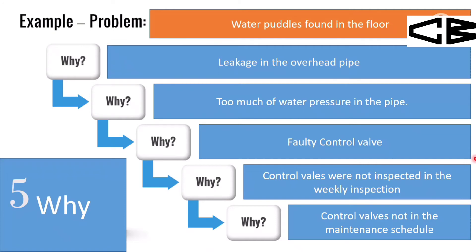Here is an example. The problem: water puddles found on the floor. Why? There was a leakage in the overhead pipe. Why was there a leakage? Too much water pressure in the pipe. Why was there too much water pressure? A faulty control valve. Why was the control valve faulty? Control valves were not inspected during the weekly inspection. Why were they not inspected? Control valves are not mentioned in the maintenance schedule. So the action is to add control valves to the maintenance schedule — that is the root cause.